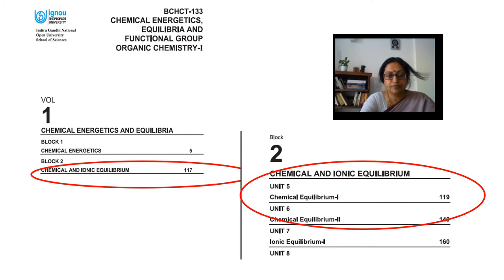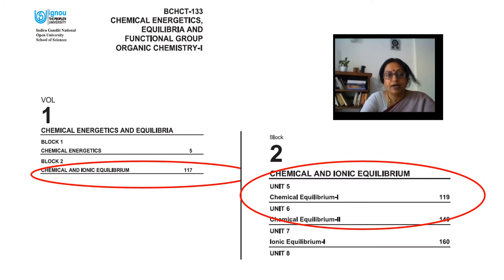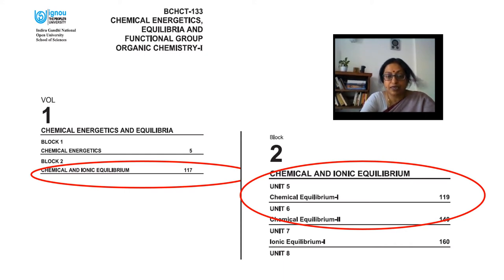My dear students, Volume 1 contains the first two blocks of the course. The first block is Chemical Energetics, which has Units 1 to 4. The second block, titled Chemical and Ionic Equilibrium, contains Units 5 to 9, covering the introduction to Chemical Equilibrium, its characteristics, and a detailed account of its applications to aqueous solutions of acids and bases.